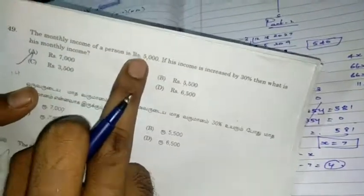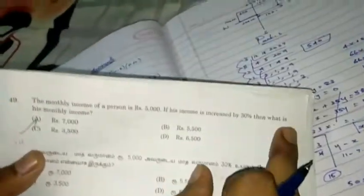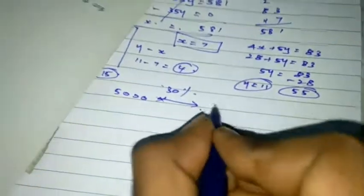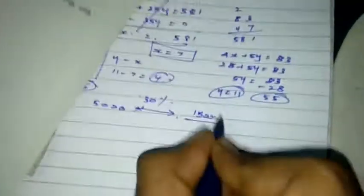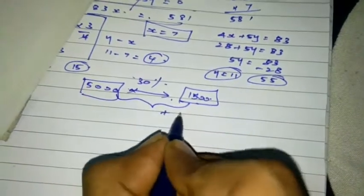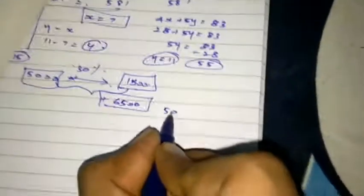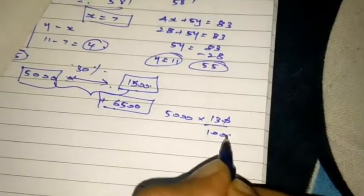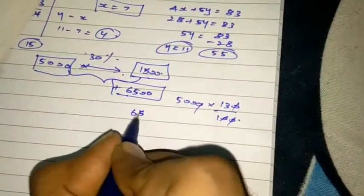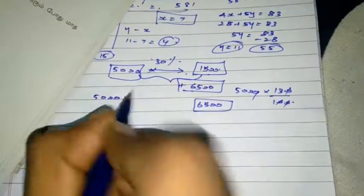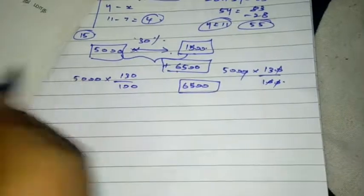The monthly income of a person is 5000. If his income is increased by 30%, then what is his monthly income? So it increased by 30%. Then 50%. So with minimum 5,000. So 50%. So if anybody can be 100%, the income is 50%. 6,500. Direct answer. Why? Now, 30% increase. That is 100% above. So, 5,000 into 130 by 100. 0,0 cancels. 6,500. Direct step.